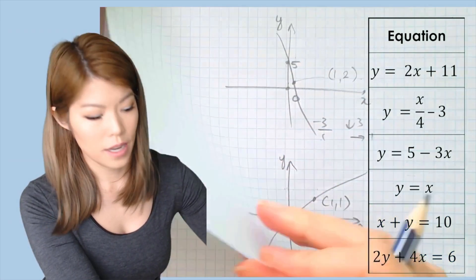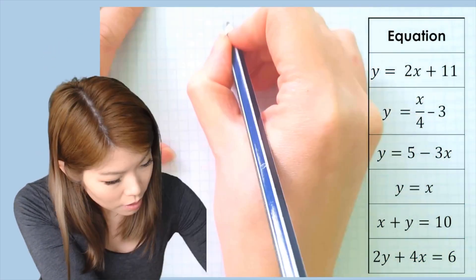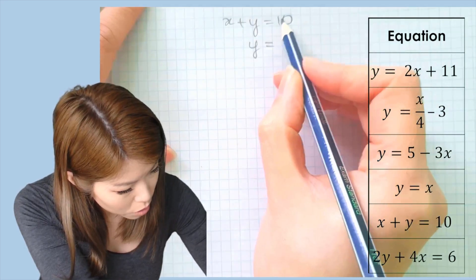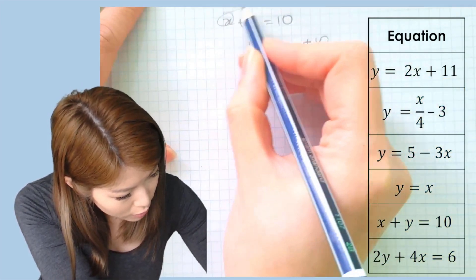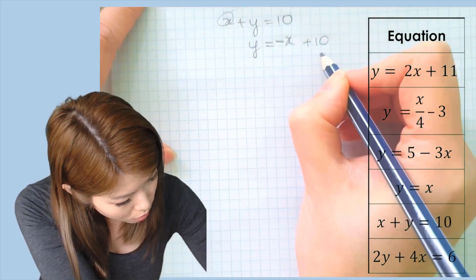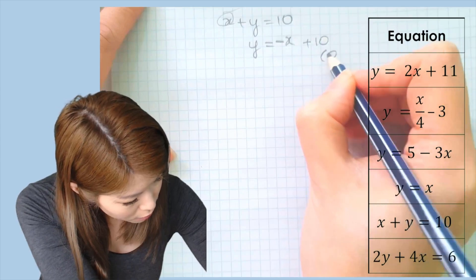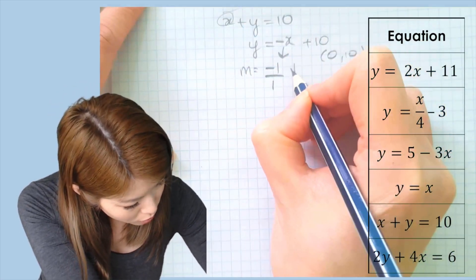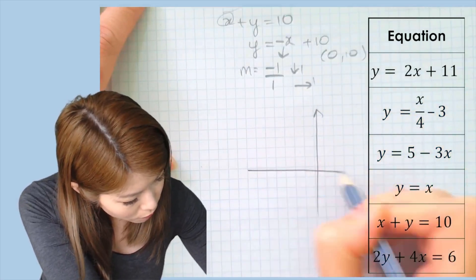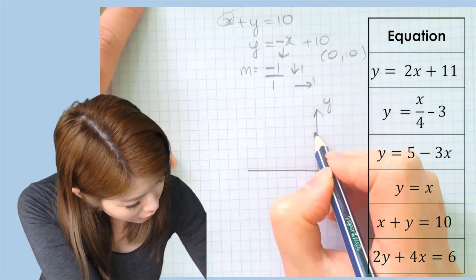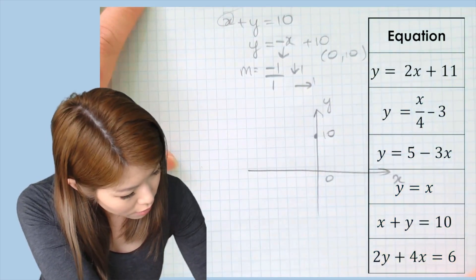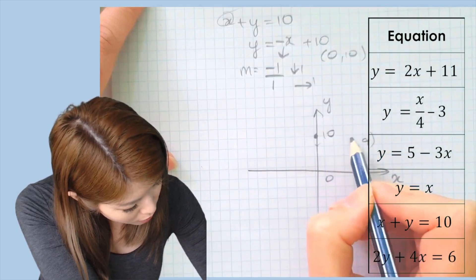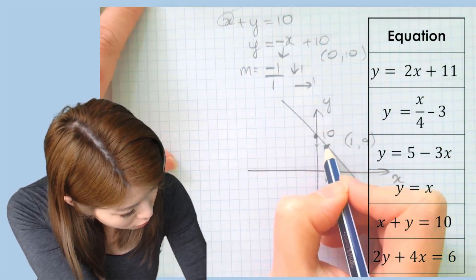For x plus y equals 10, rearrange by bringing x to the other side: y equals negative x plus 10. So y-intercept is 10 and gradient is negative 1, or negative 1 over 1 — down 1 across 1. Start at 10 on the y-axis, go down 1 to y equals 9 and across 1 to x equals 1. So our second point is (1, 9). Draw first, then dot.